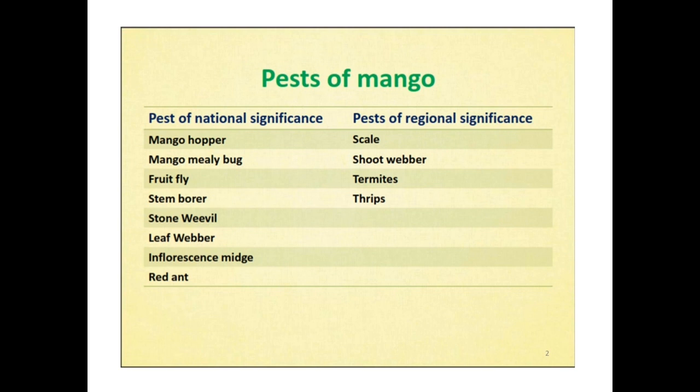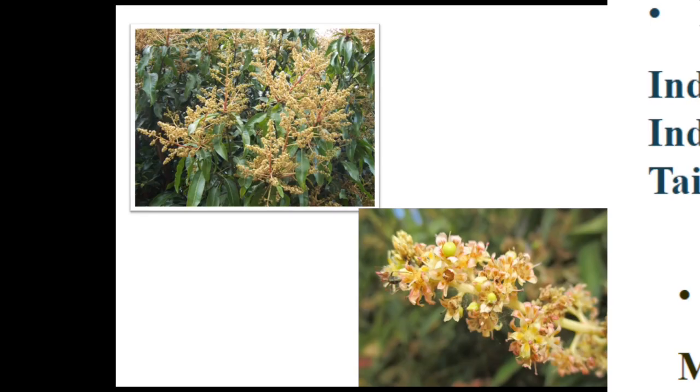Pests of national significance include mango hopper, mango mealybug, fruit fly, stem borer, stone weevil, leaf webber, inflorescence midge, and red ant. Coming to regional significance: scale, shoot webber, termites, and thrips.